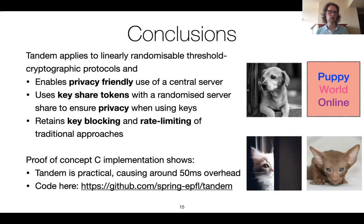To wrap up: Tandem applies to linearly randomizable threshold cryptographic protocols, enabling the privacy-friendly use of a central server through key share tokens that contain a randomized encrypted version of the server's key share so that privacy is upheld. We have key blocking and rate limiting properties. We showed through a prototype C implementation that all of this is practical. Code is online. With this, I hope that Puppy can safely visit Puppy World online, despite our evil kitten overlords. Thank you very much.